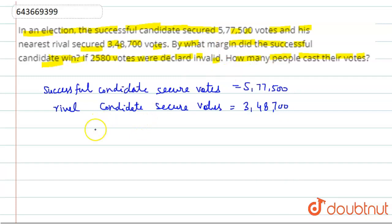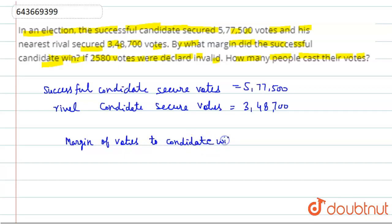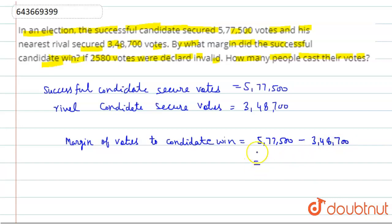Now we find the margin of votes by which the candidate won. This will be equal to successful candidate's votes minus rival candidate's votes, which is five lakh seventy-seven thousand five hundred minus three lakh forty-eight thousand seven hundred. This equals two lakh twenty-eight thousand eight hundred.